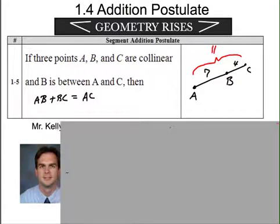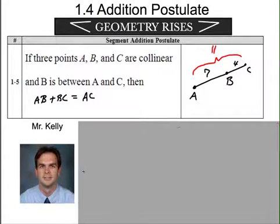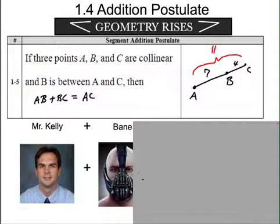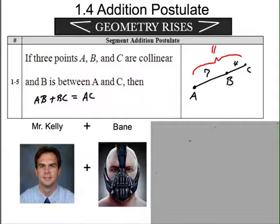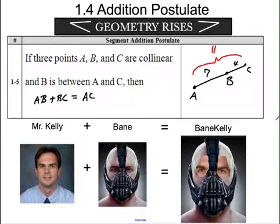Mr. Kelly is an example. So we're saying it's just like this. What if you have Mr. Kelly and you add to it, just like AB plus BC, Bane. So we're talking Batman. What are you going to get when you get Mr. Kelly plus Bane? Obviously you add those together, you get Bane Kelly. Holy cow, that's creepy. Maybe not the best example.